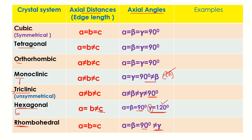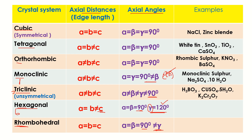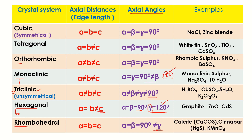Examples of each crystal system: Cubic — sodium chloride and zinc blende. Tetragonal — white tin, tin oxide, titanium oxide, and calcium sulfate. Orthorhombic — rhombic sulfur, potassium nitrate, barium sulfate. Monoclinic — monoclinic sulfur and sodium sulfate decahydrate. Triclinic — H₃BO₃, copper sulfate pentahydrate, and K₂Cr₂O₇. Hexagonal — graphite, zinc oxide, cadmium sulfate. Rhombohedral — calcite, cinnabar, and potassium permanganate.